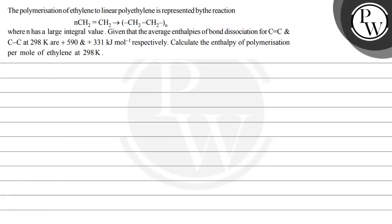Hello Bacho, let's read this question. The polymerization of ethylene to linear polyethylene is represented by the reaction: N(CH2=CH2) gives (CH2-CH2)N, where N has a large integral value. Given that average enthalpies of bond dissociation for C=C and C-C at 298 Kelvin are +590 and +331 kJ per mole respectively, calculate the enthalpy of polymerization per mole of ethylene at 298 Kelvin.